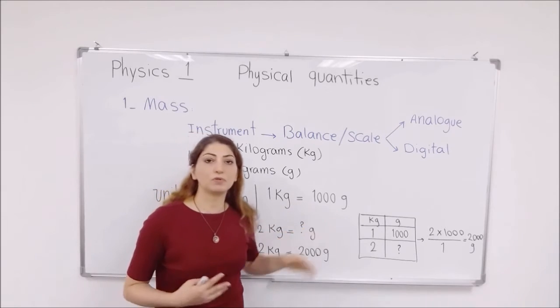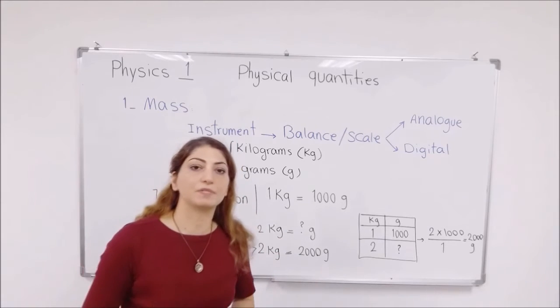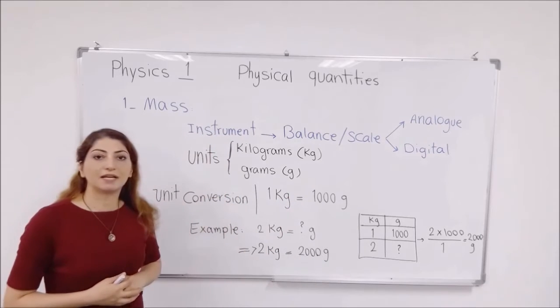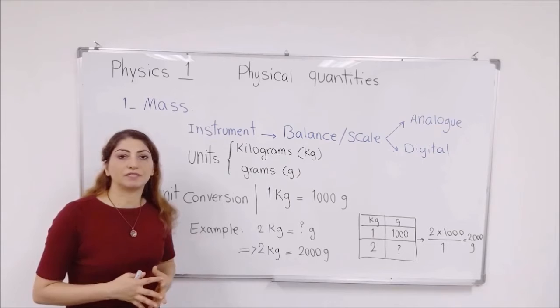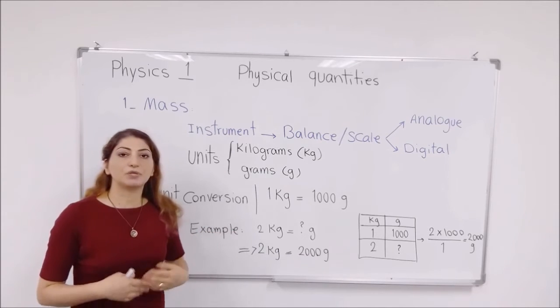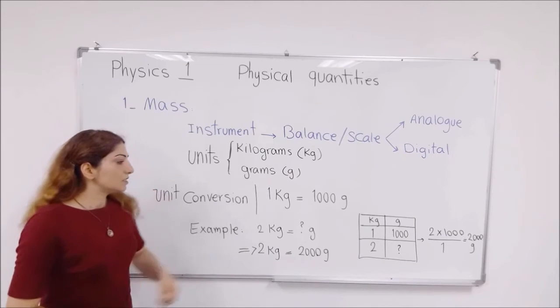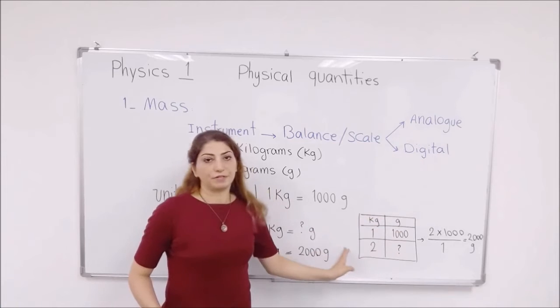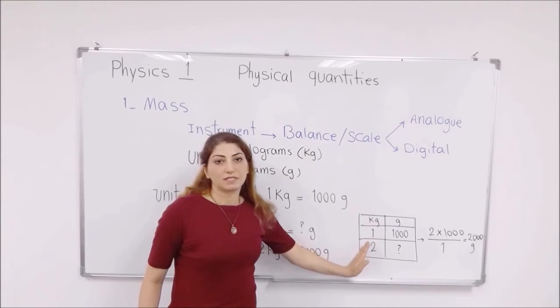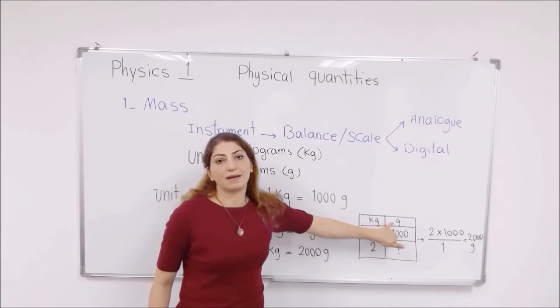So if you want to convert kilograms to grams or grams to kilograms, you can calculate any kind of data that they give you. For example, they may ask you to convert 2 kilograms into grams. You can draw this table first and name the first column as kilogram and label the other column as grams.